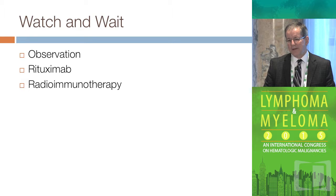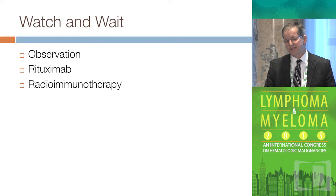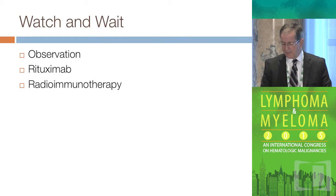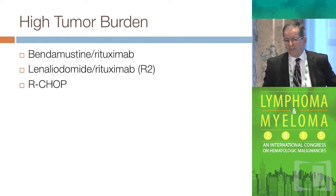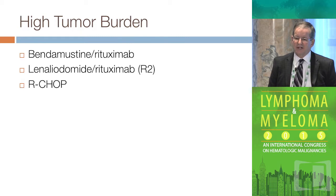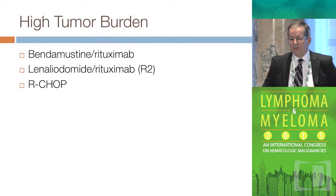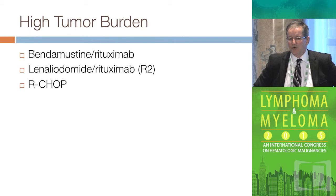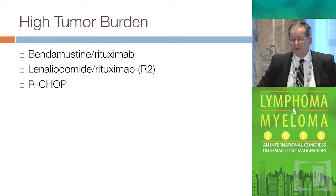For the watch-and-wait patient, you have observation, Rituxan, and a different kind of radiation called radioimmunotherapy. For the patient with high tumor burden, we're basically looking at three recipes today: bendamustine-Rituxan, R-squared which is lenalidomide-Rituxan, or R-CHOP.